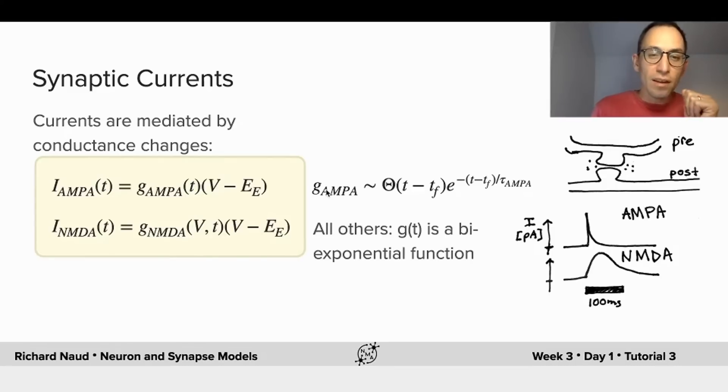Typically, we say that a change in conductance is a stereotypical time-dependent function that follows an exponential decay. For the AMPA component, the rise time being so fast, we typically assume that it's an instantaneous jump followed by a very quick decay. For all other synaptic kinds, we have a bi-exponential function that will describe the rise and the decay of the conductance.